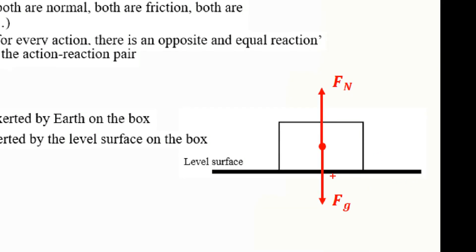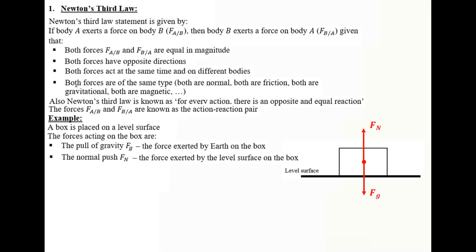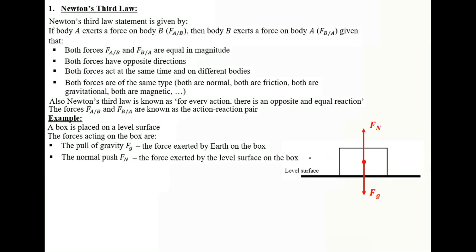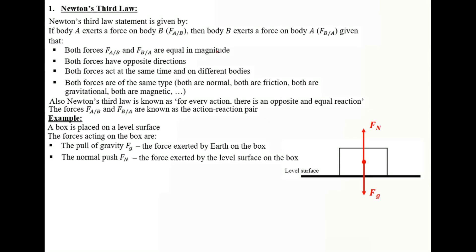F_N and the pull of gravity do not represent an action-reaction pair for several reasons. First, they are not of the same type. Also, they don't act on different bodies — both of these forces act on the box. They have opposite directions and are equal in magnitude according to balanced forces, but in order to be an action-reaction pair, they should satisfy all of these conditions.